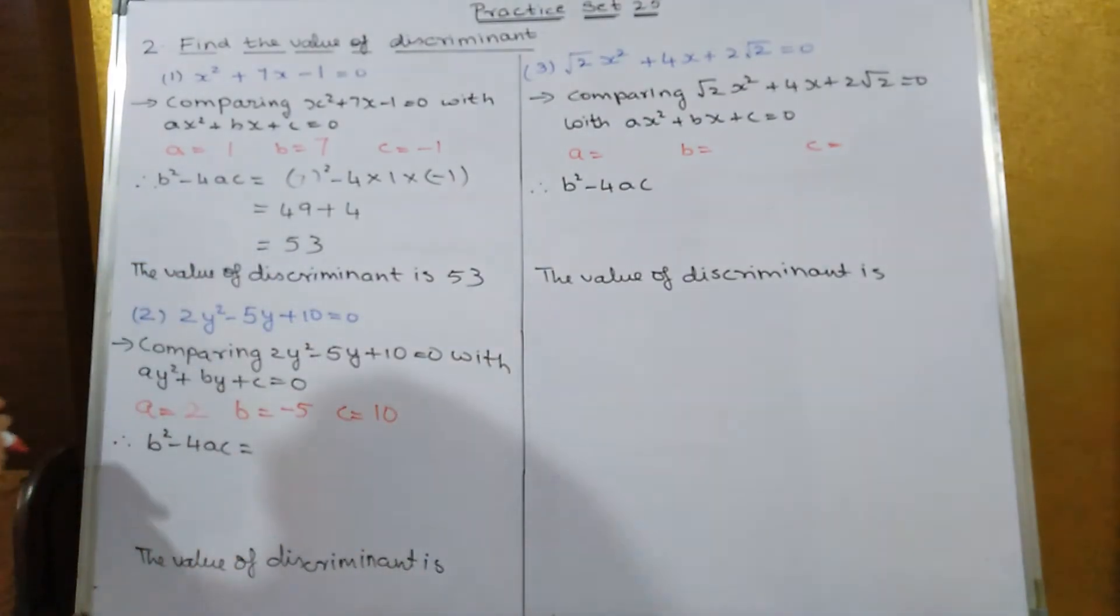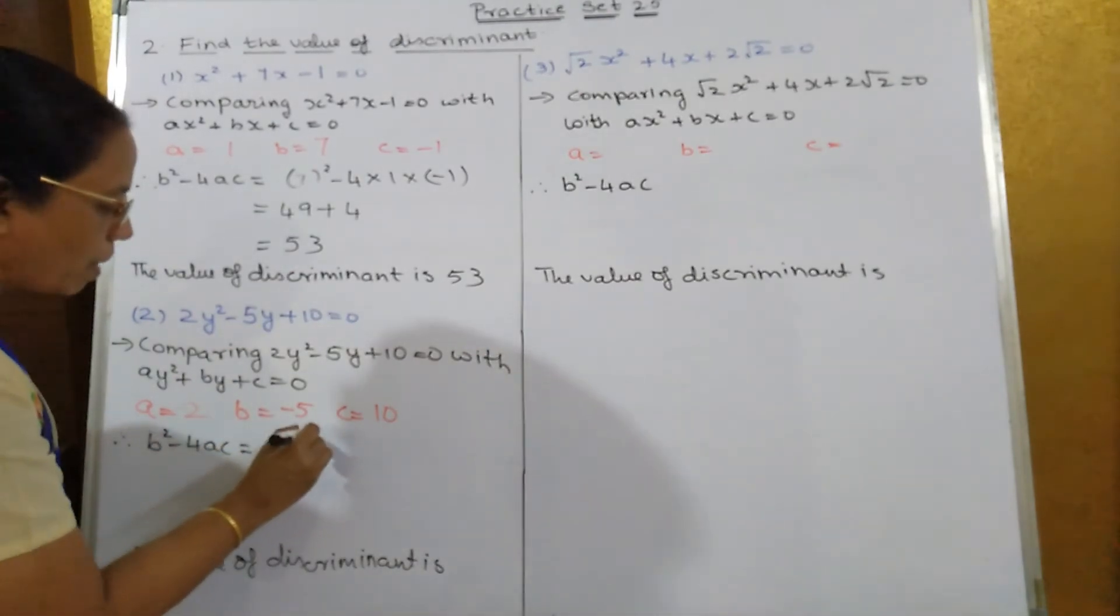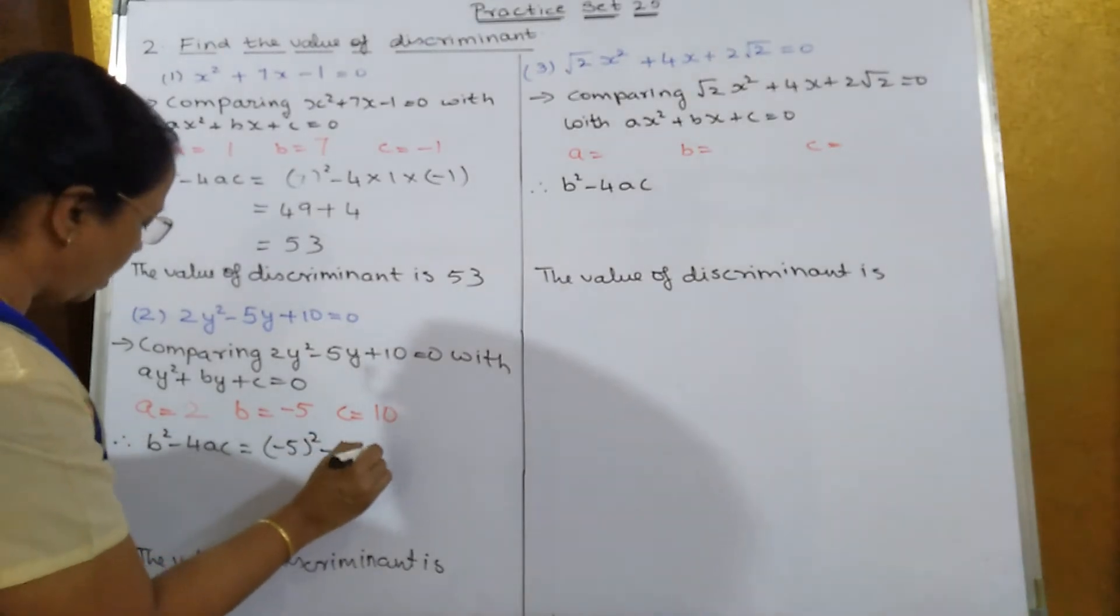So b² - 4ac. So the discriminant value is what? b² minus 4ac. So b is equal to minus 5, the whole square, minus 4 into a, is how much? 2 into 10.